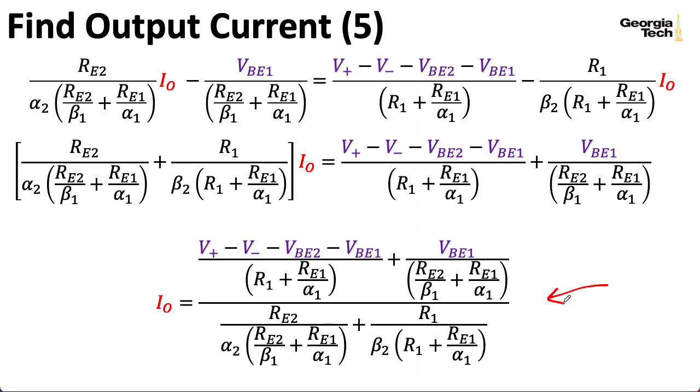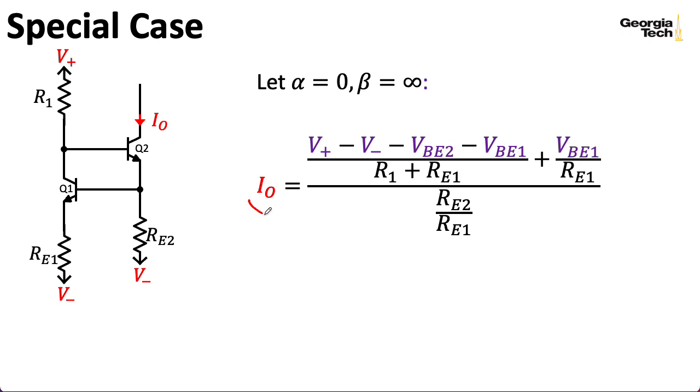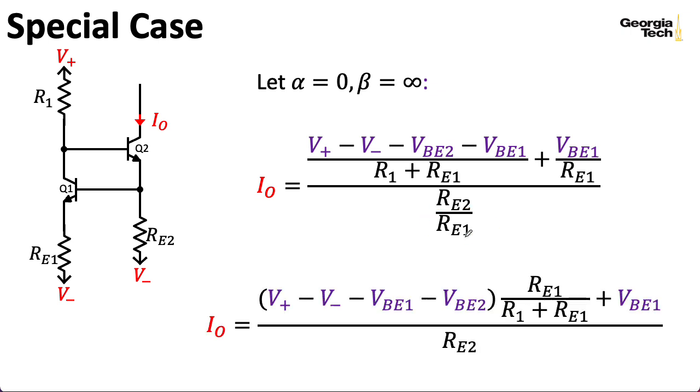To get some intuition about it, let's assume you have some really good transistors. So, you can approximate the betas as infinite and the alphas as one. So, let's see. If we're assuming that beta is infinite, this goes away, and this will go away, and this will go away. And if we're assuming that the alphas are one, this alpha goes away, this alpha goes away, this alpha goes away, and this alpha goes away. All right. So, making all of those changes, under those approximations, we can write the output current like this. Let me multiply the numerator and the denominator by RE1. So, I can wind up with an expression that looks like this.